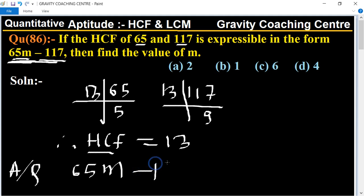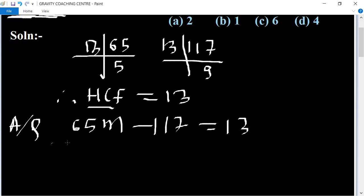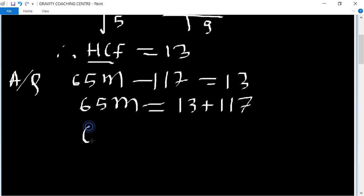Then 65m equals 13 plus 117, and then 65m equals 130. Therefore m equals 130 upon 65. We will cancel by 2.